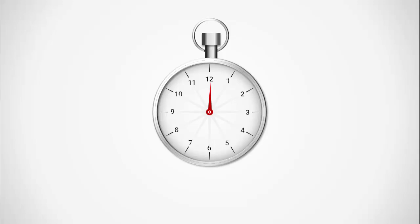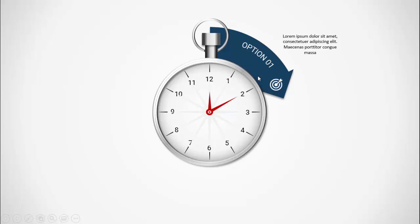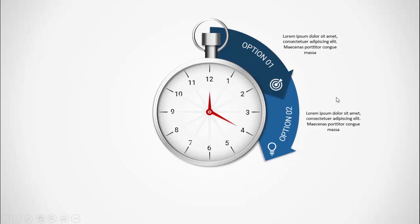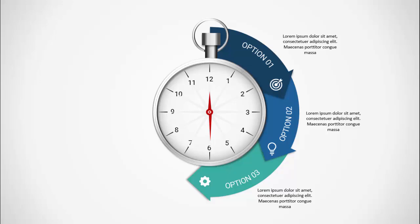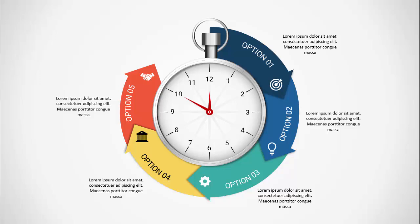When I click you can see the needle moves from 12 to 2, and then option one comes along with the icon and the detailed text. When I click again the needle moves to point four, then option two comes, then at six option three, option four, and option five. I've also created one more slide where the needle moves slowly, as if it's a real watch.